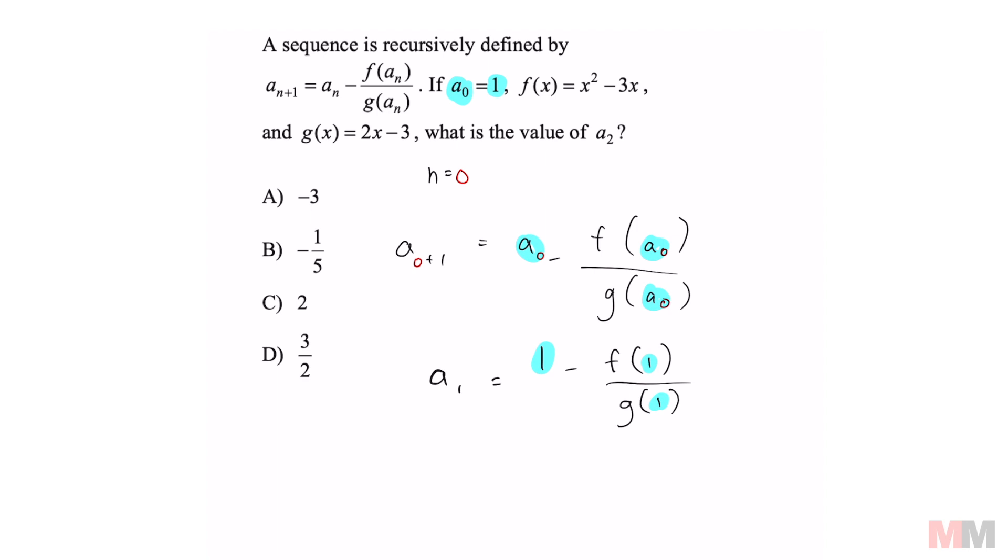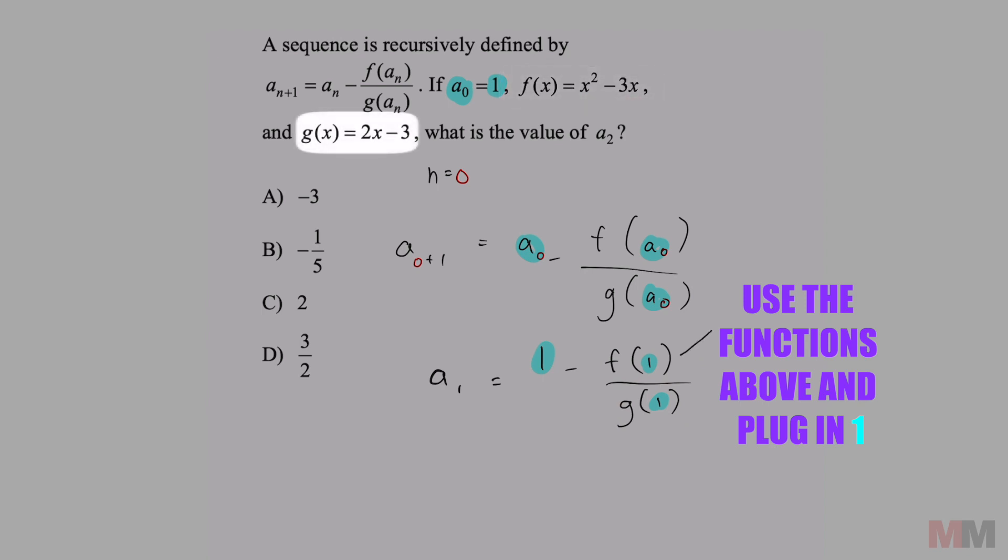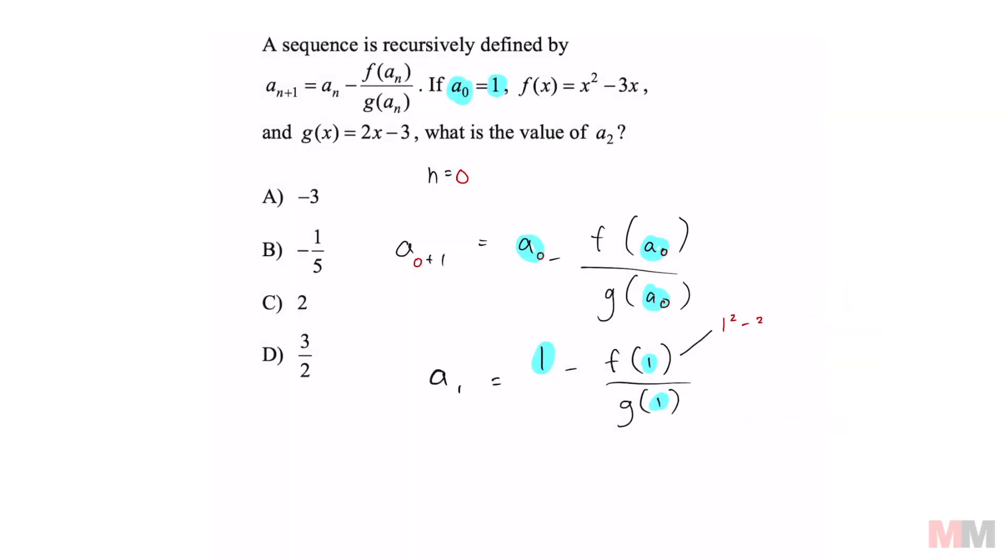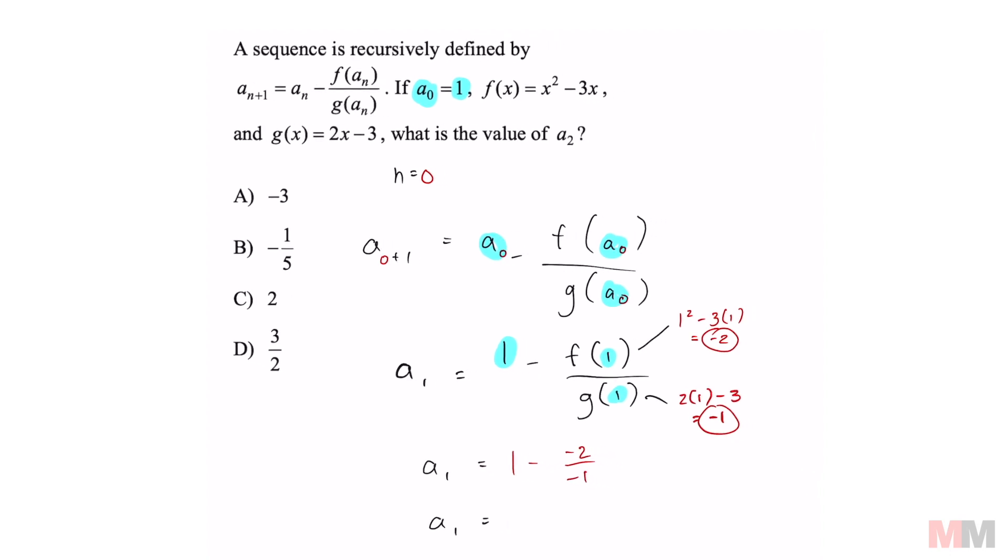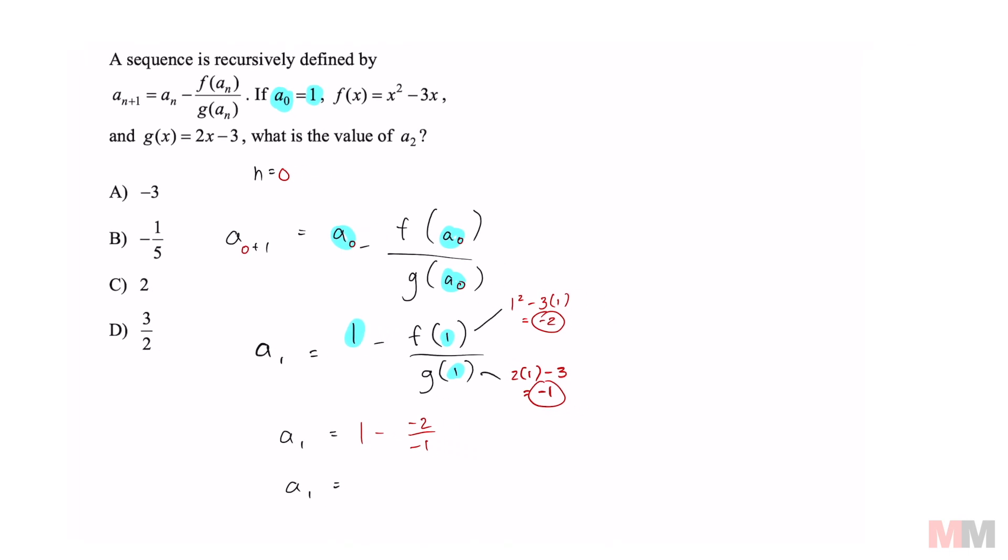So now we're going to focus on the function right here. We got the input of 1 that we're going to replace these x values with. So f of 1 will equal 1 squared minus 3 times 1, and that equals negative 2. And on the denominator, we're going to plug in a 1 in this function, which is just 2 times 1 minus 3. That equals negative 1. Now that simplifies to 1 minus negative 2 over negative 1. So a sub 1 is going to equal negative 1.